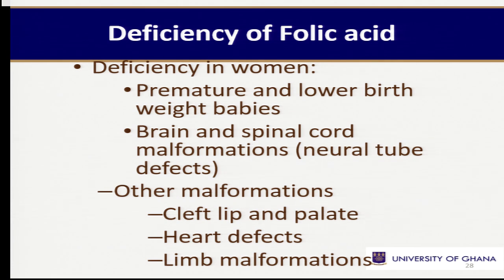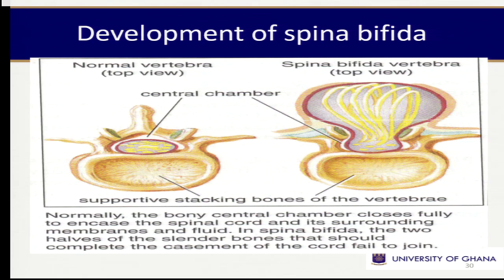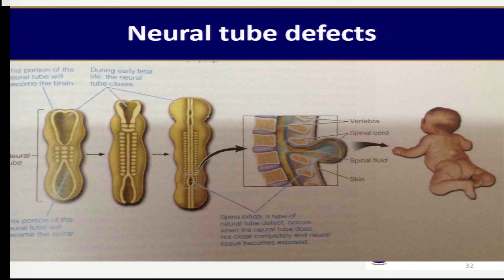Other malformations due to folic acid deficiency include cleft lip and palate, heart defects, and limb malformation. In Ghana, over 1,000 cases have been recorded at Korle Bu Hospital. The picture on screen shows the beginning — in the womb, the arrow points to the spine, which should be sealed, but due to folic acid deficiency it is not sealed properly. Fluid from the spine accumulates and bulges out. Due to superstitions, some such children in Ghana and Africa are thrown away, which still happens today.